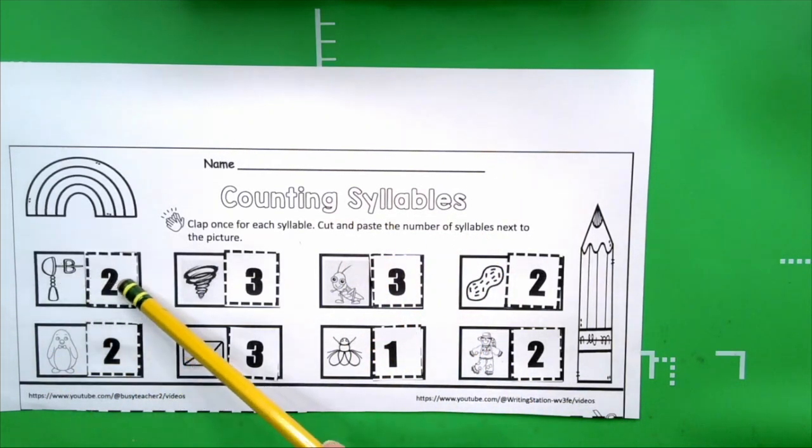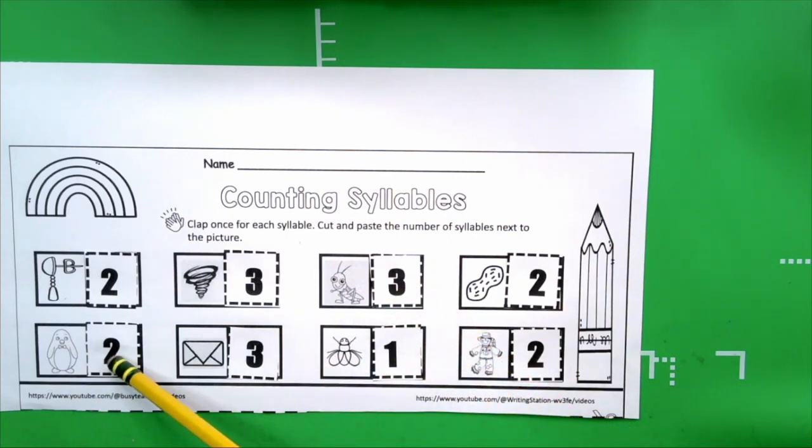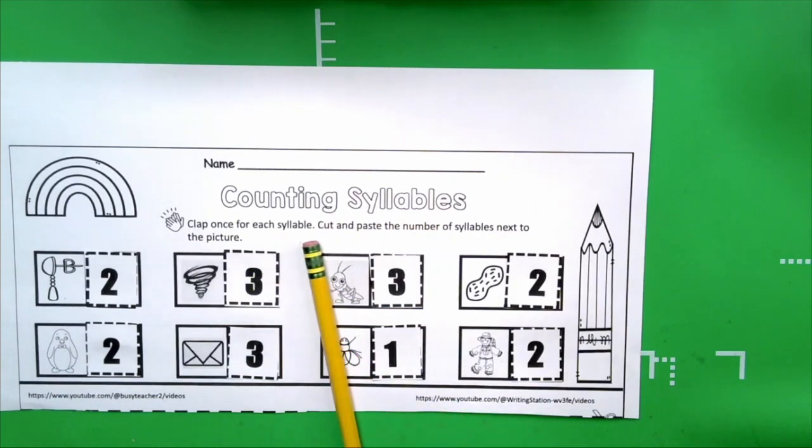Earring has two syllables. Scarecrow has two syllables. Fly has one syllable. Grasshopper has three syllables. Grass-hop-per. Penguin has two syllables. Penguin. Very good, boys and girls. And Volcano has three. Vol-ca-no. Very good. You did excellent.